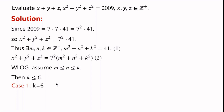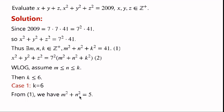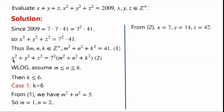Case 1: k equals 6. Then equation 1 becomes m squared plus n squared equals 5. So m equals 1, n equals 2.